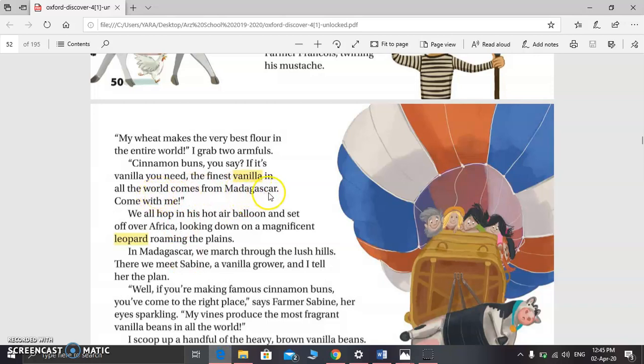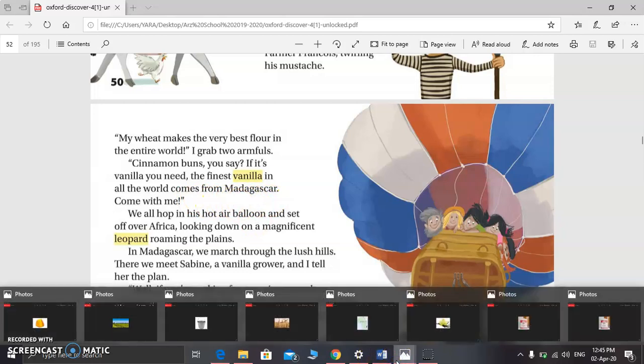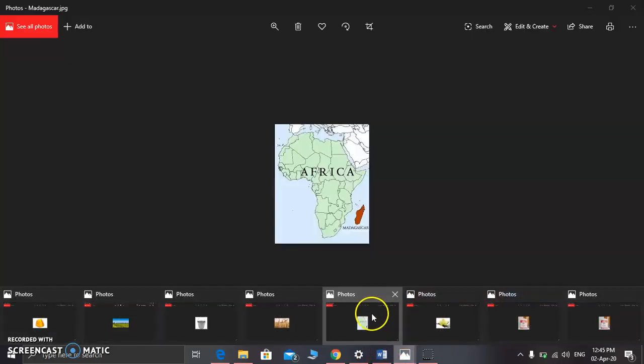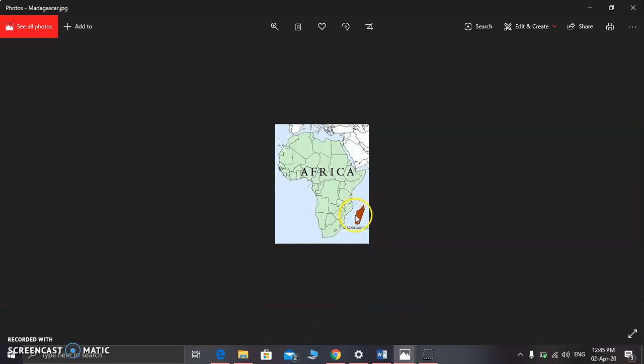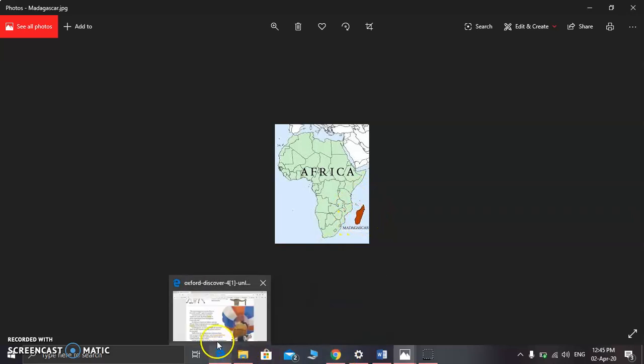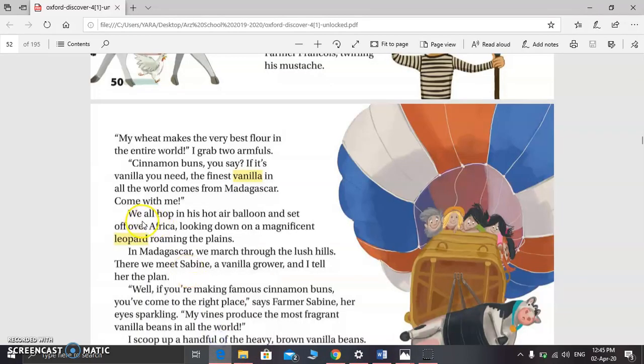The finest vanilla in all the world comes from Madagascar. Madagascar is a place. Let me show you on the map. It's a country in Africa. Here is Madagascar, this is the continent of Africa. So the best vanilla comes from this country. Let's continue. We all hop, means a jump, in his hot air balloon. This is the hot air balloon. And set off, means begin our journey, over Africa.